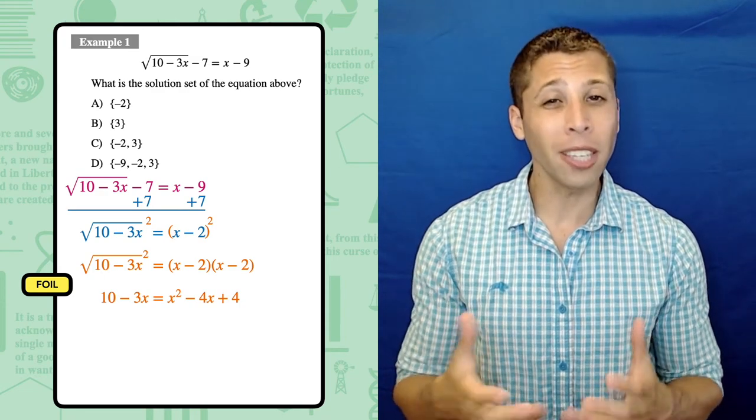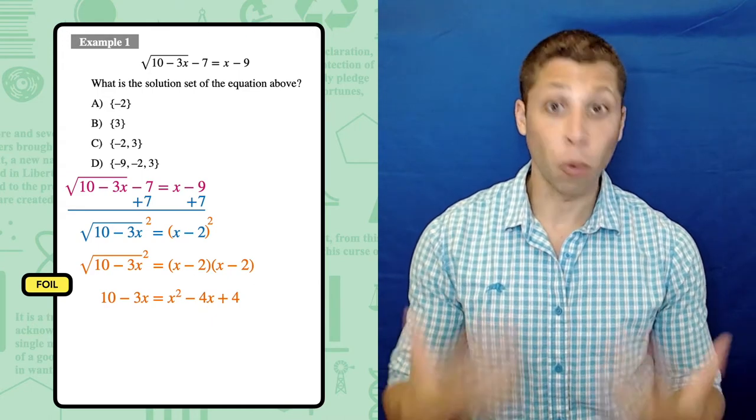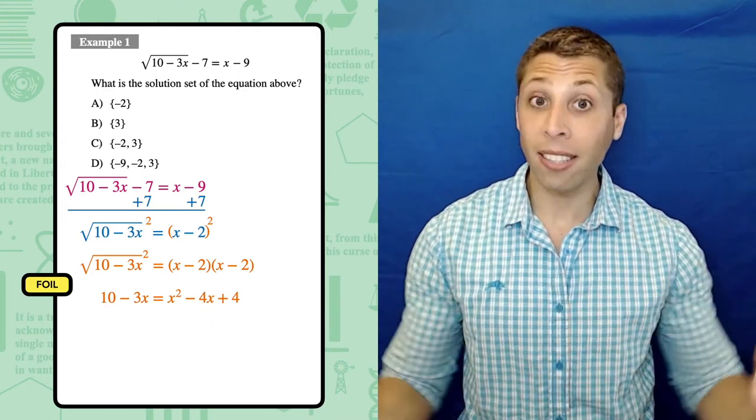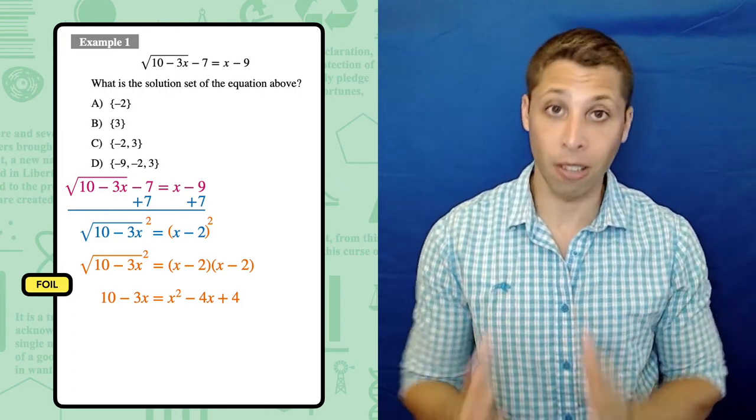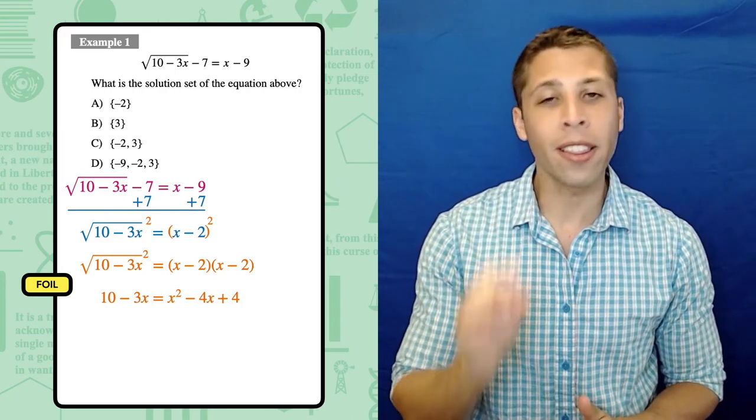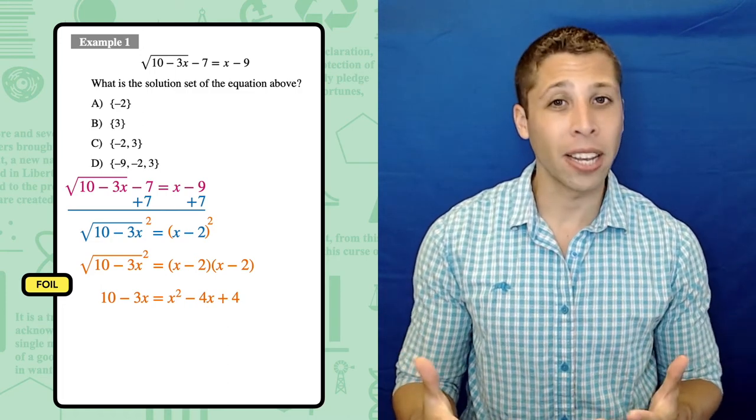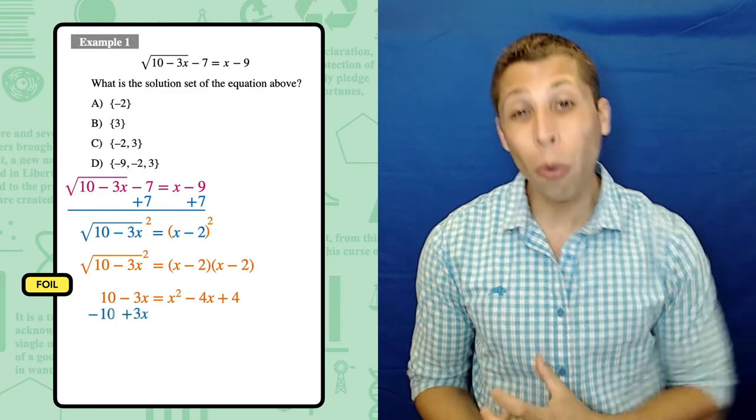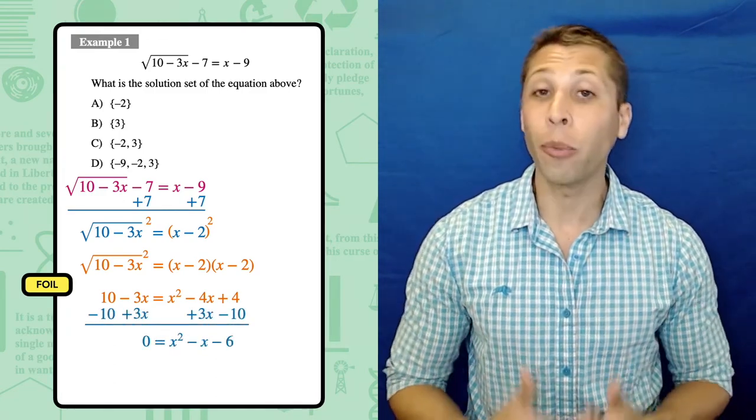This is a much better looking equation than the one we started with, but there are still some pretty difficult steps ahead. Our normal instinct with algebra, the way we're taught, is to isolate x, move everything away from x so that x is alone. But when we have an x squared, this instinct is wrong. In fact, we kind of need to do the opposite and bring all of the stuff toward the x. We want this equation equal to 0 so that we can factor.